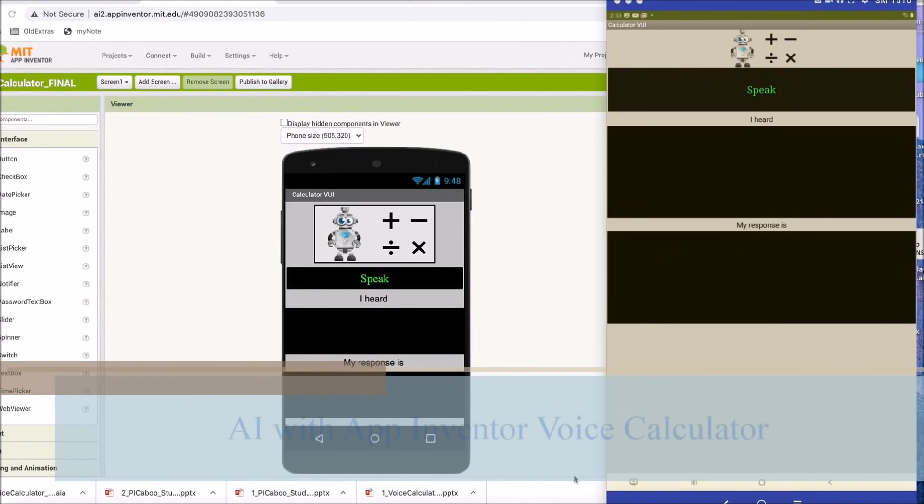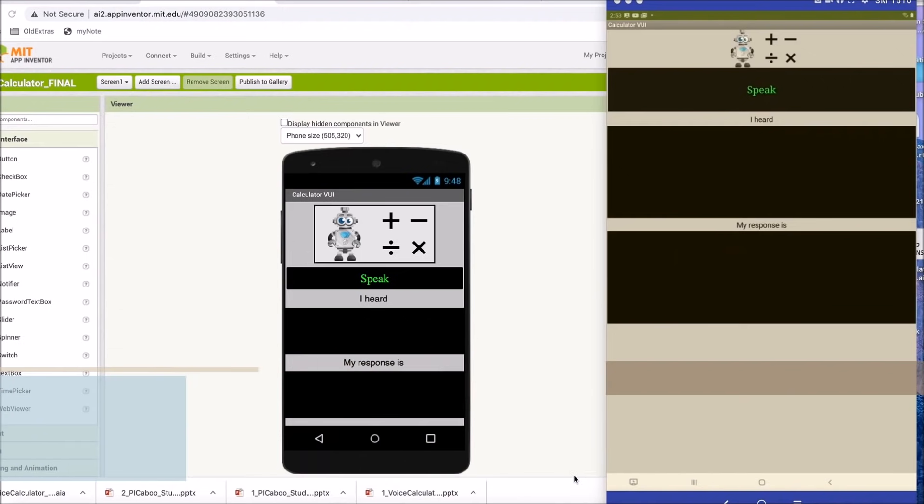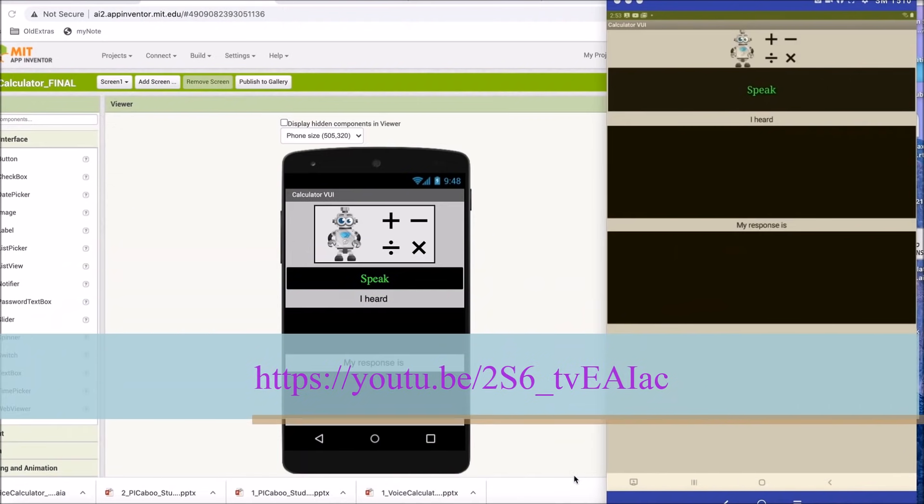Today, we're going to be coding the voice calculator. It is basically a conversational AI agent, similar to Alexa and Siri. And what we're going to do is, first of all, we're going to demo the final product so you have a sense what it's going to look like.